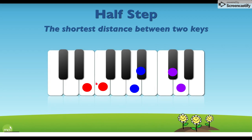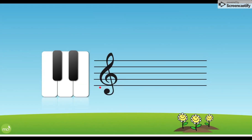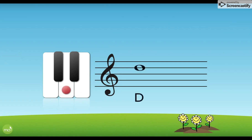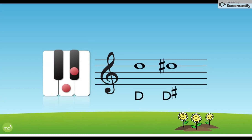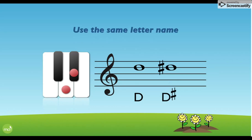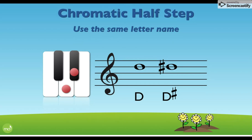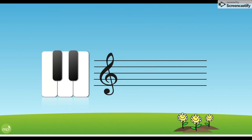We have two different types of half steps. The first type is demonstrated here on this D on the keyboard and on the staff — going to the very next black key, we are going up by a half step, so we are going to D sharp. Remember, a sharp raises a note by a half step. When we use the same letter name, D to D sharp, it is called a chromatic half step.